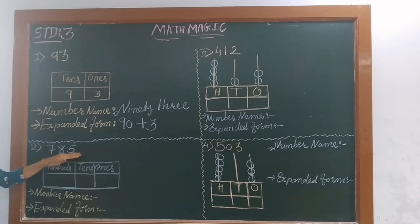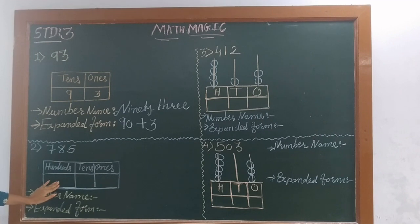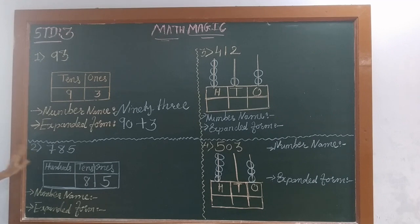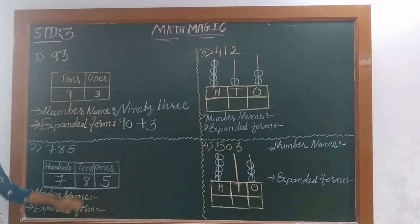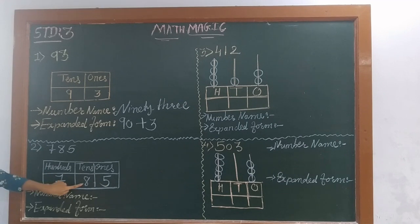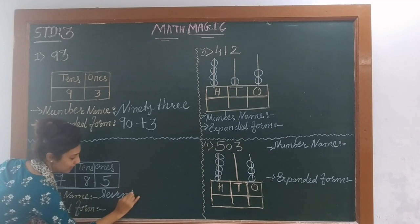Now see the next number, which is 785. You know we will start from the right side. 5 is at 1's place, 8 is at 10's place, and 7 is at 100's place. Now the number name of this number — how to read? 7 is at 100's place, so we will read it as 785.